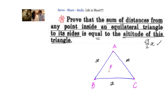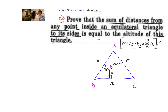To solve this problem, we need to prove the sum of distances from P to AB, BC, and AC. We know that the distance between a point and a line is always the perpendicular distance. So from P, let us drop a perpendicular to AB, similarly to BC, and also to AC. Let us say these perpendiculars are h1, h2, and h3. So h1 plus h2 plus h3 equals root 3 by 2 into x — this is what we need to prove.